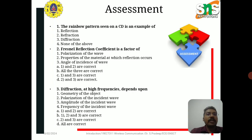Assessment questions are given in this slide. First: the rainbow pattern seen on a CD is an example of reflection, refraction, diffraction, or none of the above? Second: the Fresnel reflection coefficient is a factor of polarization of the wave, properties of the material at which reflection occurs, and angle of incidence — which combination is correct? Third: diffraction at high frequencies depends on geometry of the object, polarization of the incident wave, amplitude of the incident wave, or frequency of the incident wave — which combination is correct?